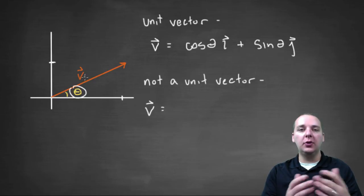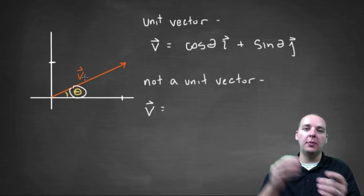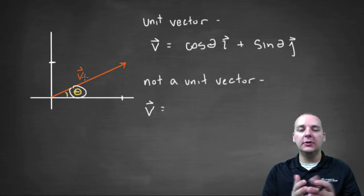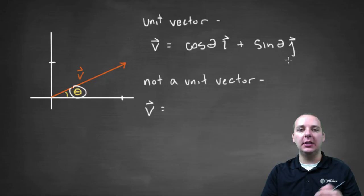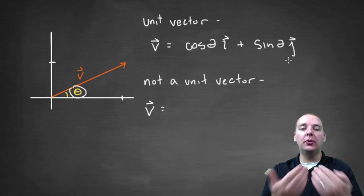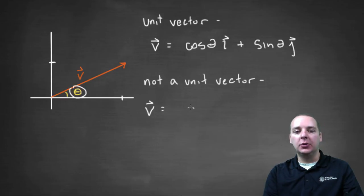Now what do you do if they give you an angle theta, but your vector is not a unit vector, so it might be longer or shorter? Well, it's very simple. We're going to aim in the appropriate direction using cosine theta i plus sine theta j, and then we're simply going to multiply it by whatever scalar is desired.